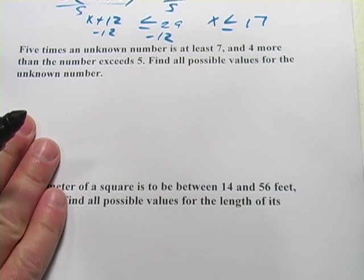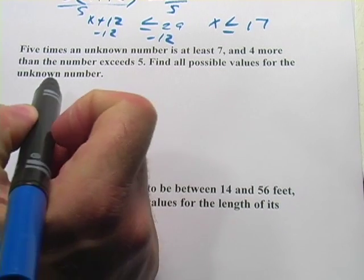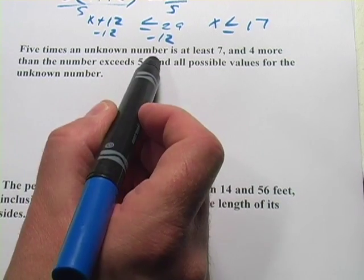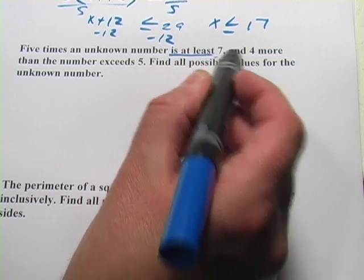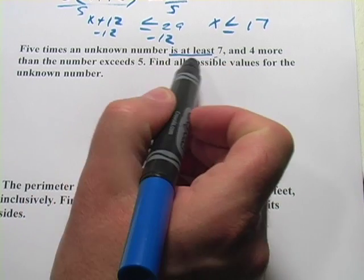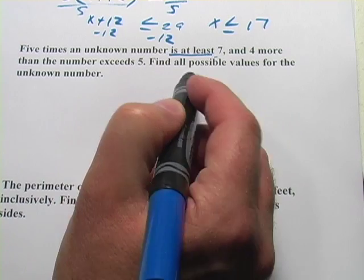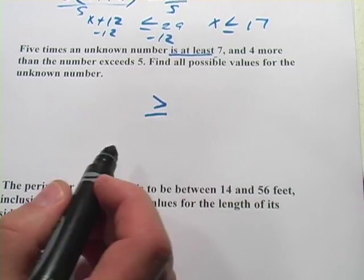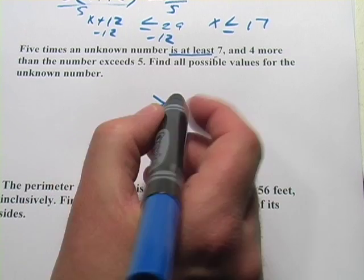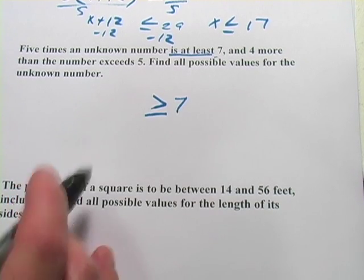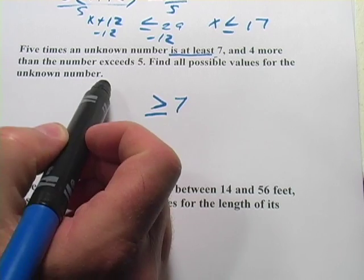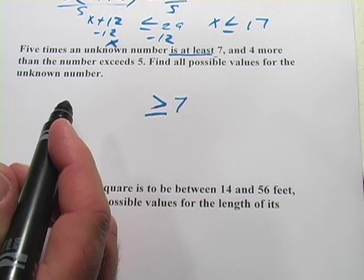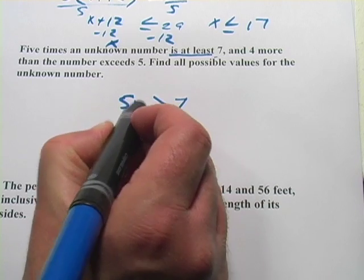Let's try another one. This one says five times an unknown number is at least seven. So here's our inequality, is at least. When something is at least, it could be equal to that or could be greater than that. So greater than or equal to. So it's at least seven. And five times an unknown number. Well, the unknown number is x. So we multiply it. Five times x is just 5x.